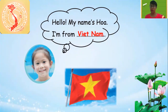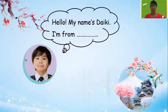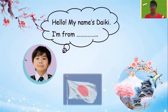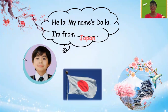Đây là câu giới thiệu về tên và đất nước của mình. Xin chào, tên của tôi là Hoa. Tôi đến từ nước Việt Nam. Next. Look at the boy. Hello, my name's Daiki. I'm from Japan.